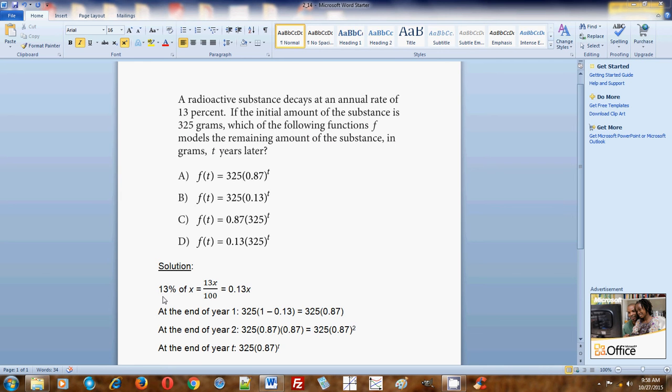So first of all, 13% of something, and this something we'll label as x. So 13% of x is equal to 13 times x divided by 100. This is how you convert from 13% of something, you convert it to a real number.